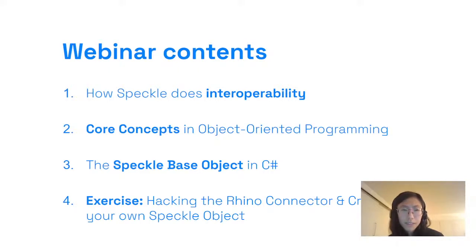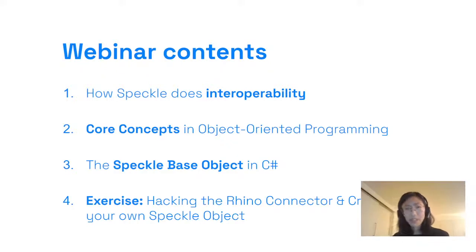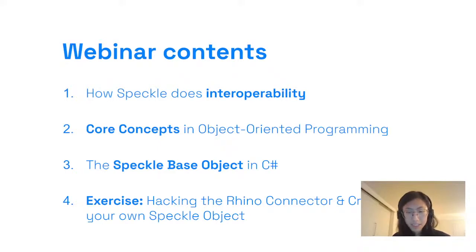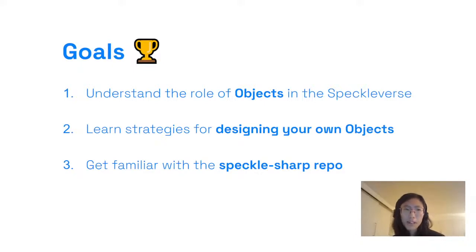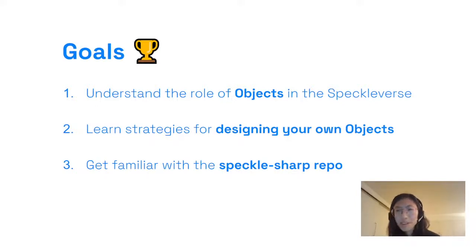This webinar will cover a few topics. We'll start with how Speckle approaches interoperability, then talk about some core concepts in object-oriented programming, cover the Speckle base object in C# specifically, and finally end with an exercise where we'll hack our Speckle Rhino connector and do a simple test of creating your own Speckle object. The goals are to understand the role of objects in the Speckleverse and to learn strategies for designing your own objects.